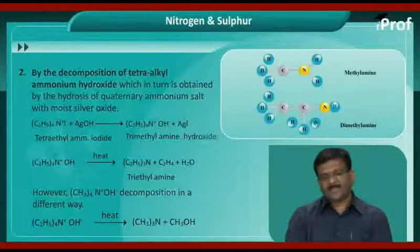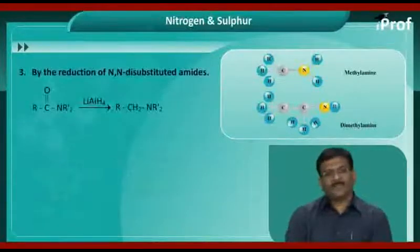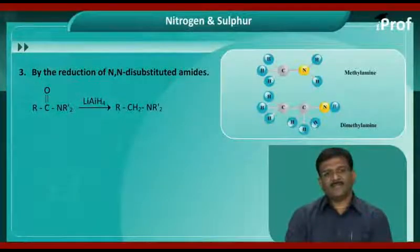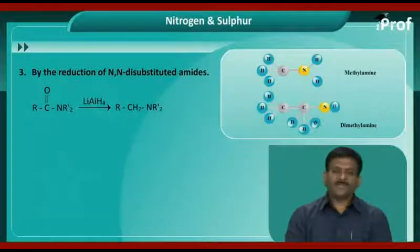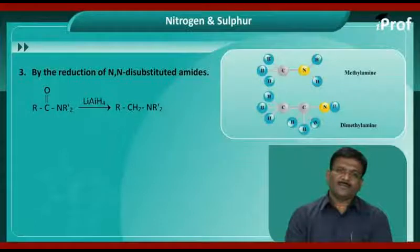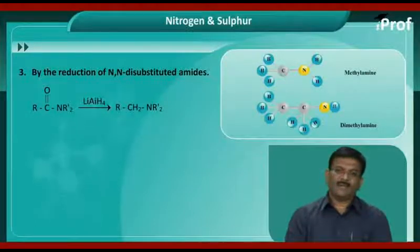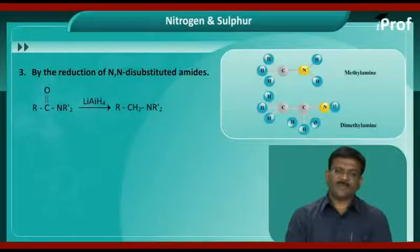Next method: by the reduction of N,N-disubstituted amides. Disubstituted amides, when reduced in the presence of lithium aluminum hydride, give the corresponding tertiary amines.